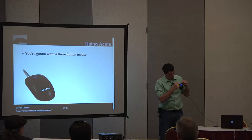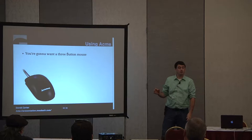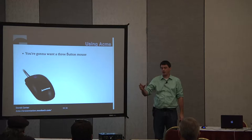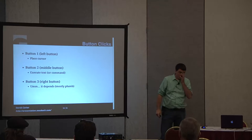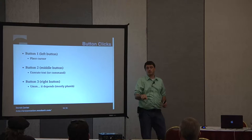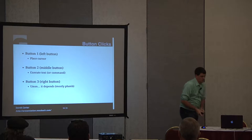There are also trackballs that work very well — they have three buttons, a pointer, and a scroll mechanism. Button clicks: button one is the left button, and by default it just places the cursor. Button two is the middle button, and it does a little double duty but most often it's for executing. When I want to save the file, if I modify the buffer, two things happen: this little block turns purple, indicating a dirty buffer, and it puts the Put command into the tag.